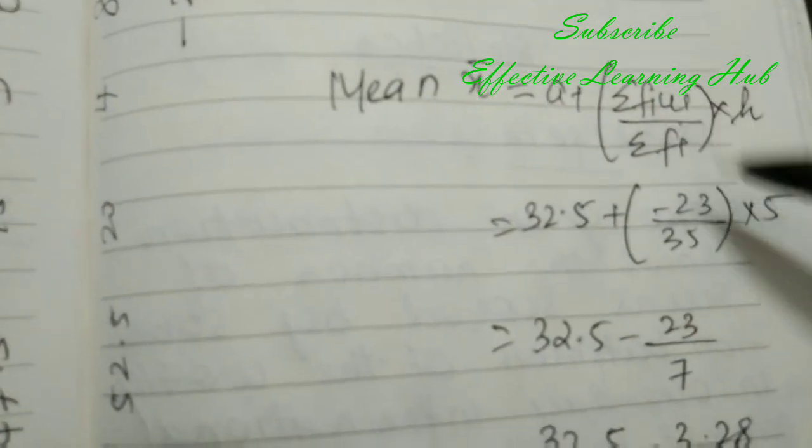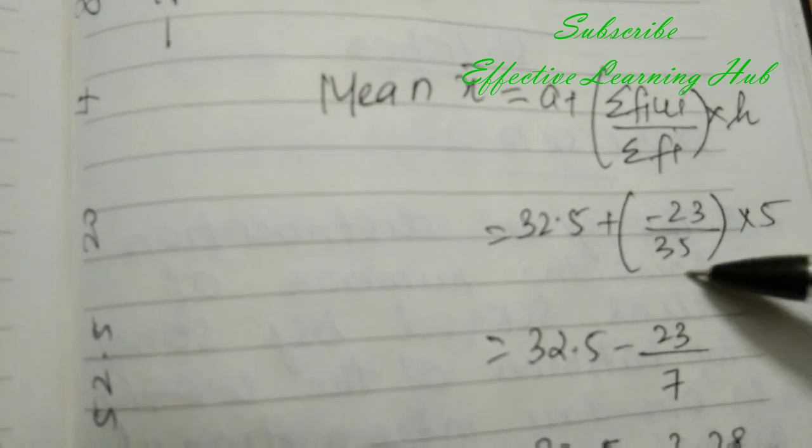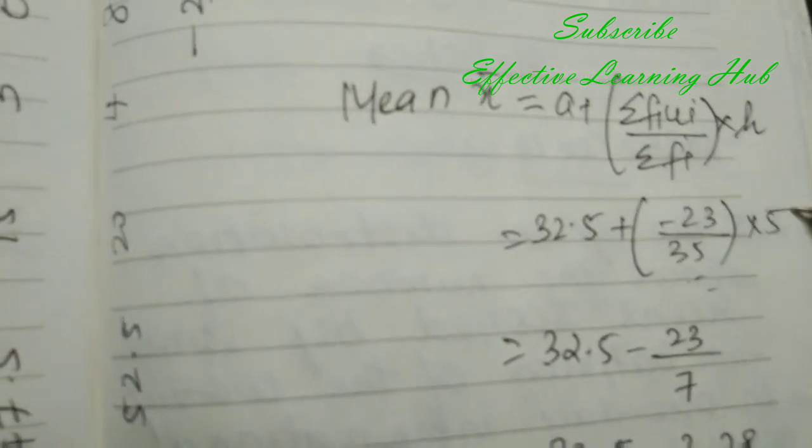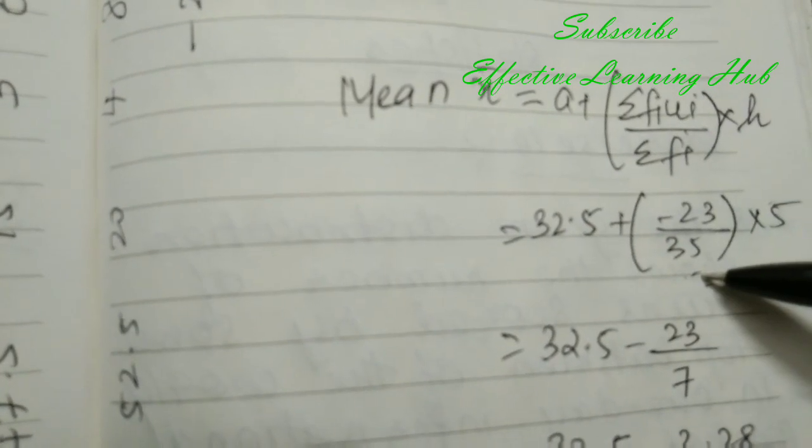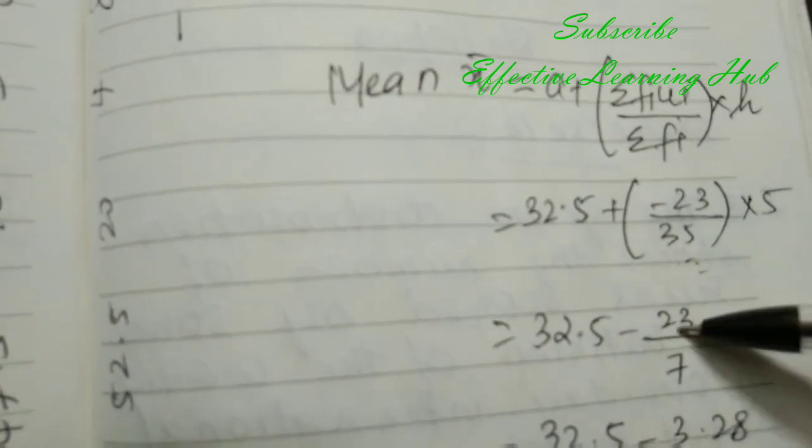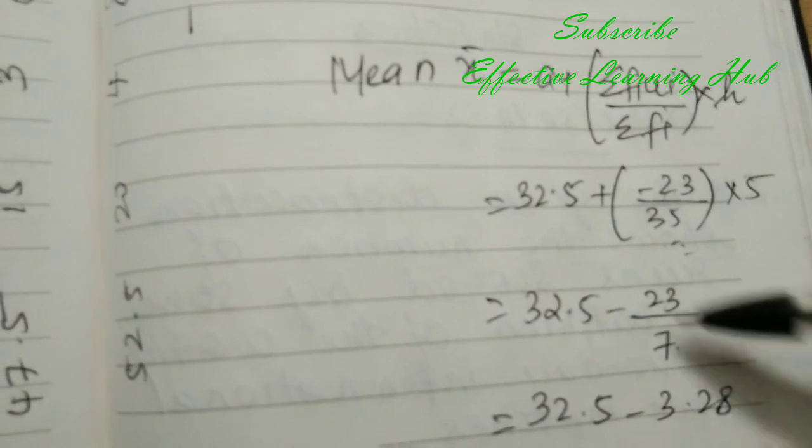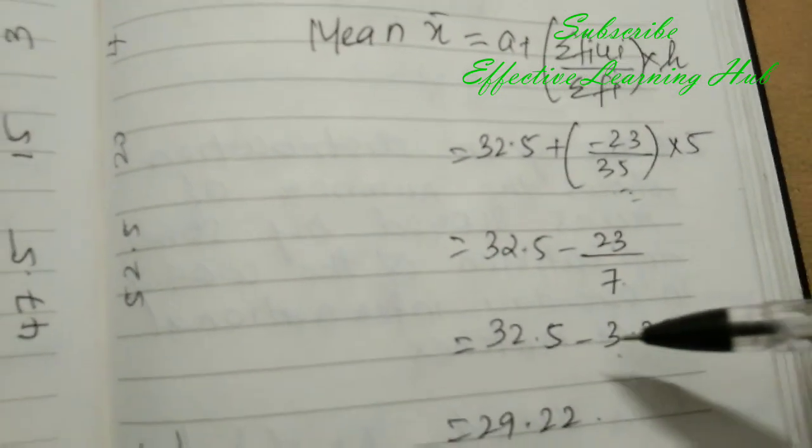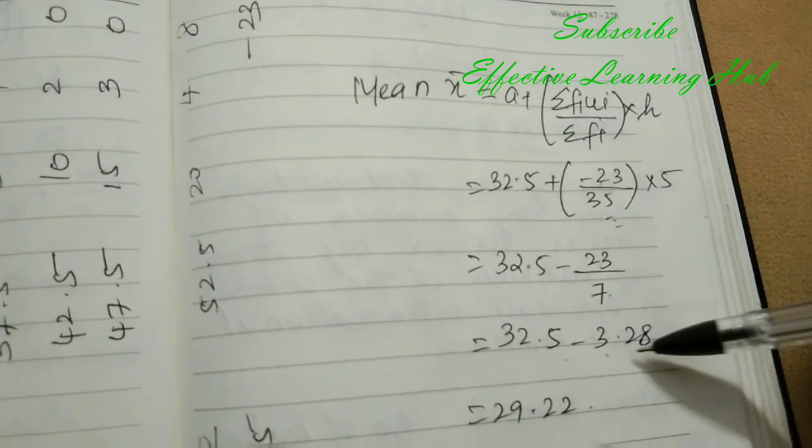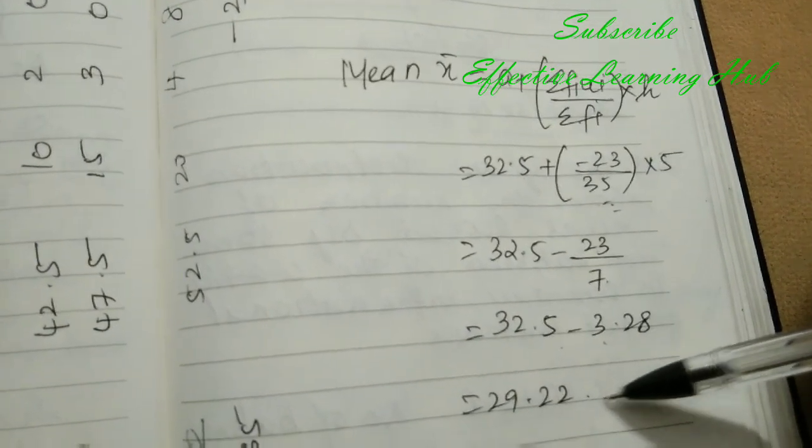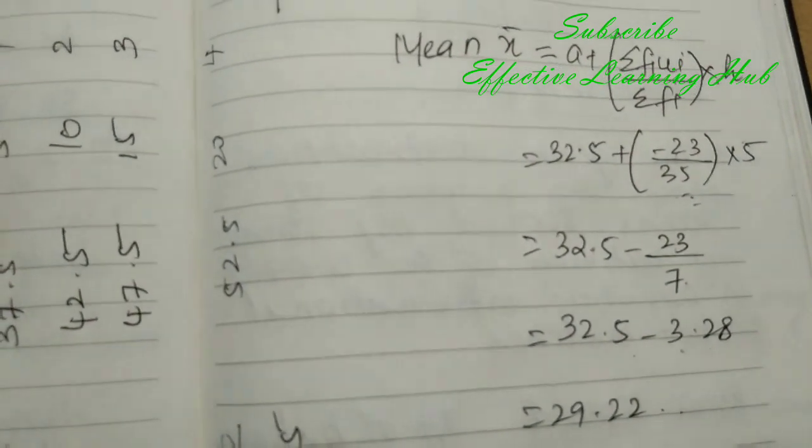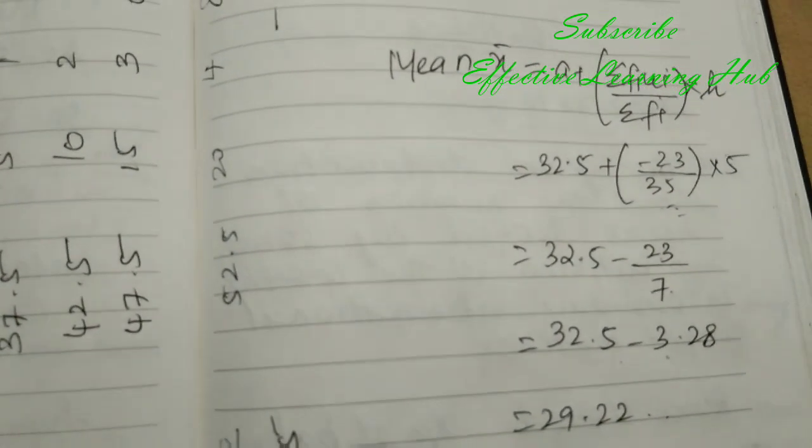Plus Sigma FI UI equal to minus 23, FI equal to 35, into 5. Now cut: 7 fives are 35, so minus 23 divide by 7. Minus 23 divide by 7 equal to minus 3.28. 32.5 minus 3.28 equal to 29.22. Okay, thank you.